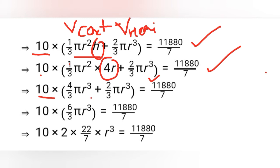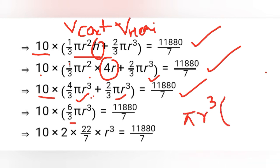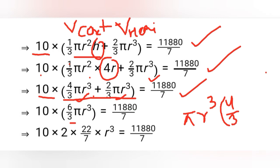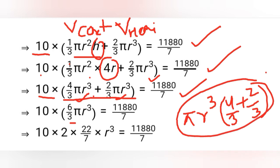Volume of cone is (1/3)πr²h = (1/3)πr²(4r) = (4/3)πr³, and volume of hemisphere is (2/3)πr³. Adding these: (4/3)πr³ + (2/3)πr³ = (6/3)πr³ = 2πr³. So we have 10 × 2πr³ = 11880/7.